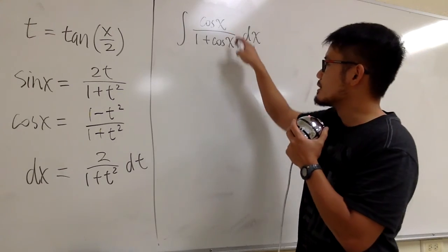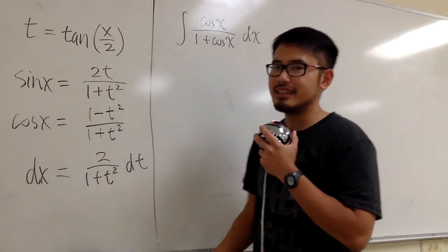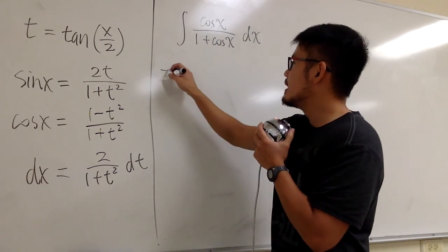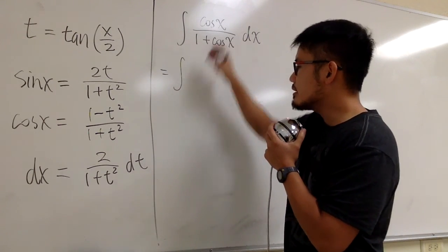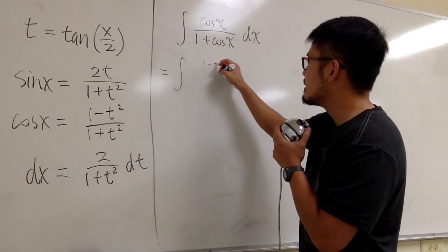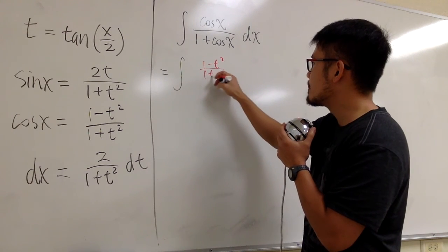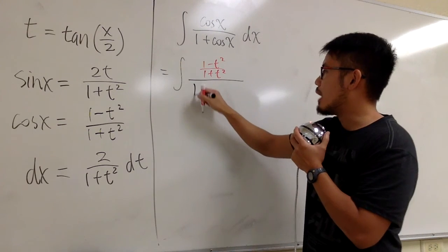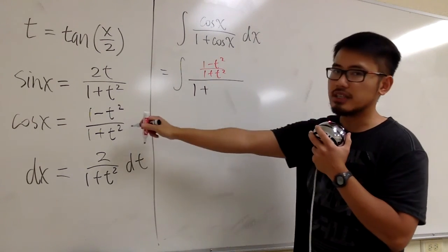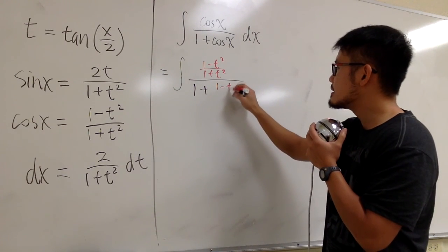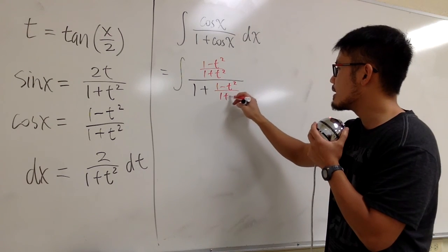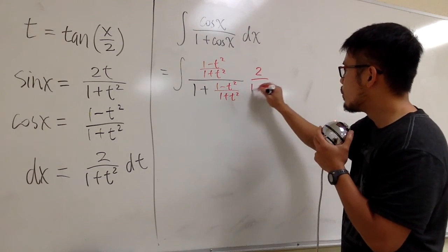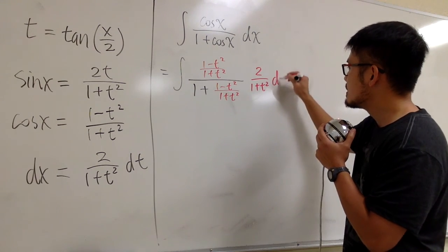So all the cos(x) are going to be replaced, and then the dx is going to be replaced as well. This is going to be the integral. On the top we will have (1 - t²)/(1 + t²), and on the bottom we have 1 plus that same (1 - t²)/(1 + t²). And then for dx, we have 2/(1 + t²) dt.